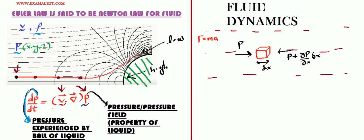Now you can easily write the force experienced along the x direction. We know that force equals pressure times area. The area here is delta y times delta z, so the force from the first face is P times delta y times delta z.